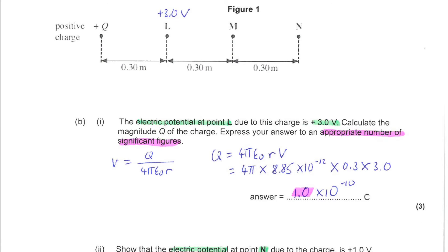Next, you're shown part of a region around a small positive charge. That is the charge plus Q shown on the left-hand side of the diagram here. You are told that the electric potential at L due to this charge is equal to 3 volts. You are then asked to calculate the magnitude of the charge Q and to express your answer to an appropriate number of significant figures.